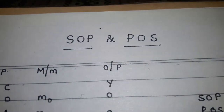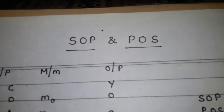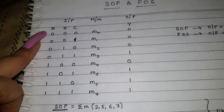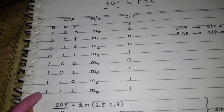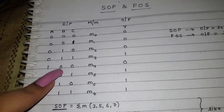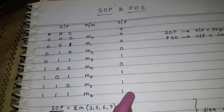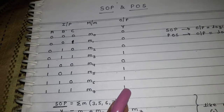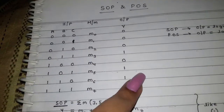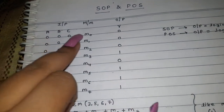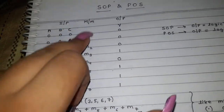Let's move on to SOP and POS forms. For writing SOP and POS forms, first of all we have inputs — suppose A, B, C are your possible inputs — and these possible combinations of values. Each possible combination has a distinct output given by Y. We are going to write the value of M: M0, M1, M2, M3, and so forth.